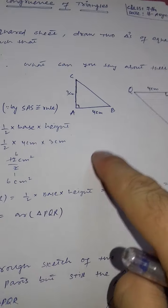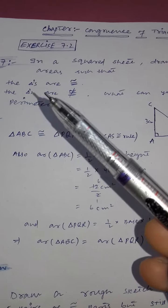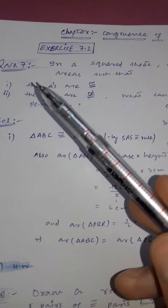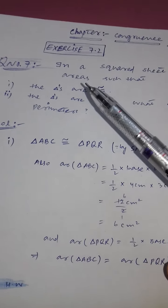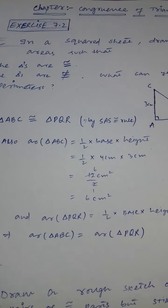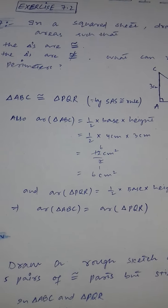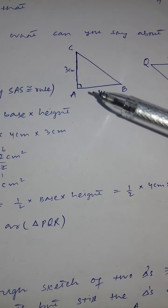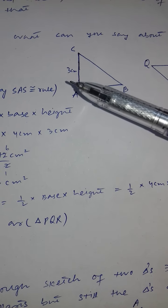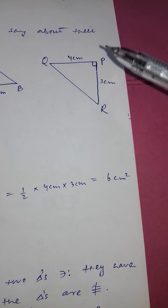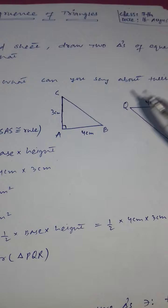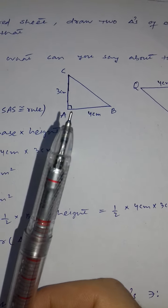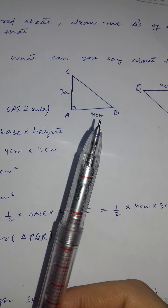I am taking a plane sheet and drawing two triangles. As per part one, both triangles should be congruent, and the triangles must have the same area. I took triangle ABC right-angled at A, with AB = 4 cm and AC = 3 cm. In triangle PQR, angle P = 90°, PQ = 4 cm, and PR = 3 cm. Both triangles are congruent by the Side-Angle-Side (SAS) rule.